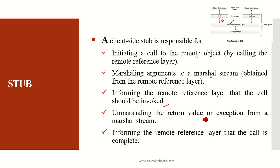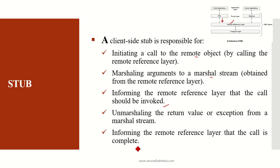The next step is unmarshaling the return value or exception from the marshal stream, because the data needs to be passed on to the skeleton. Finally, the stub informs the remote reference layer that the call is complete. When the response comes back, the values must be unmarshaled.